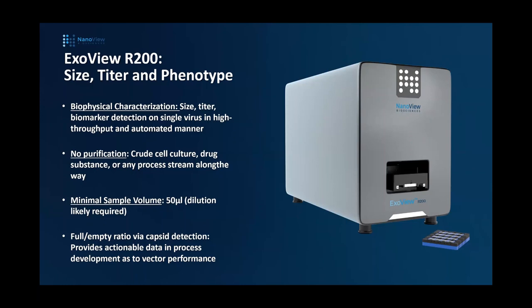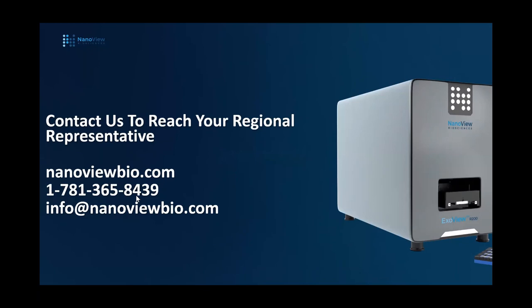Wrapping up: the ExoVR 200 provides size, titer, and phenotype capability — biophysical characterization of single virus particles including size, counts, and extra marker detection — in a high-throughput automated system. No purification is required; crude cell culture, drug substances, any process stream along the way are welcome. Minimal sample volume — never more than 50 microliters, and often just a couple of microliters to get really nice data characterizing thousands of single virus particles from your mixture. This full/empty ratio via capsid detection provides actionable data for process development, vector performance, and tracking additional particles moving through separations. We will directly follow up with all poll requests. Contact us at info@nanovbio.com or reach your regional representative. Thank you for joining today.